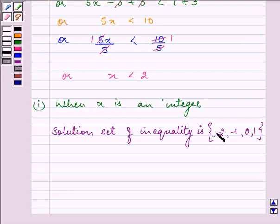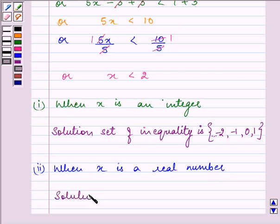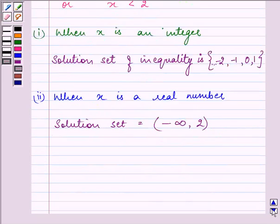And when x is a real number, then the solution set consists of all real numbers that are less than 2, and hence it will be written as solution set equals minus infinity to 2 in an open interval.